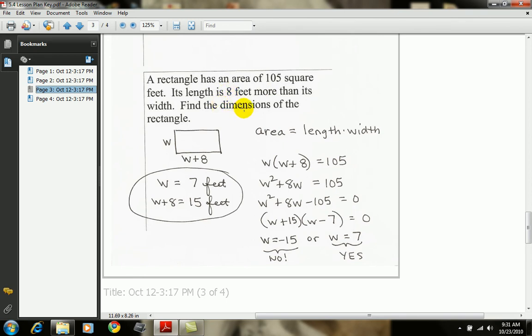When it says find the dimensions, that means find both the length and the width. I don't know the width, so I'll call it w in my diagram. w plus 8 would be the length, since the length is 8 feet more than the width.